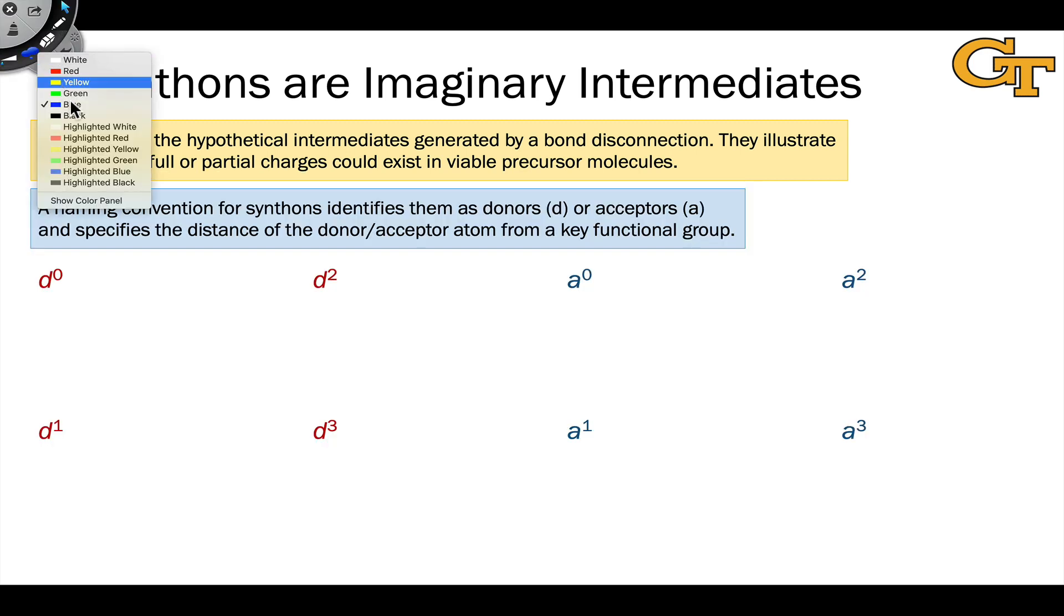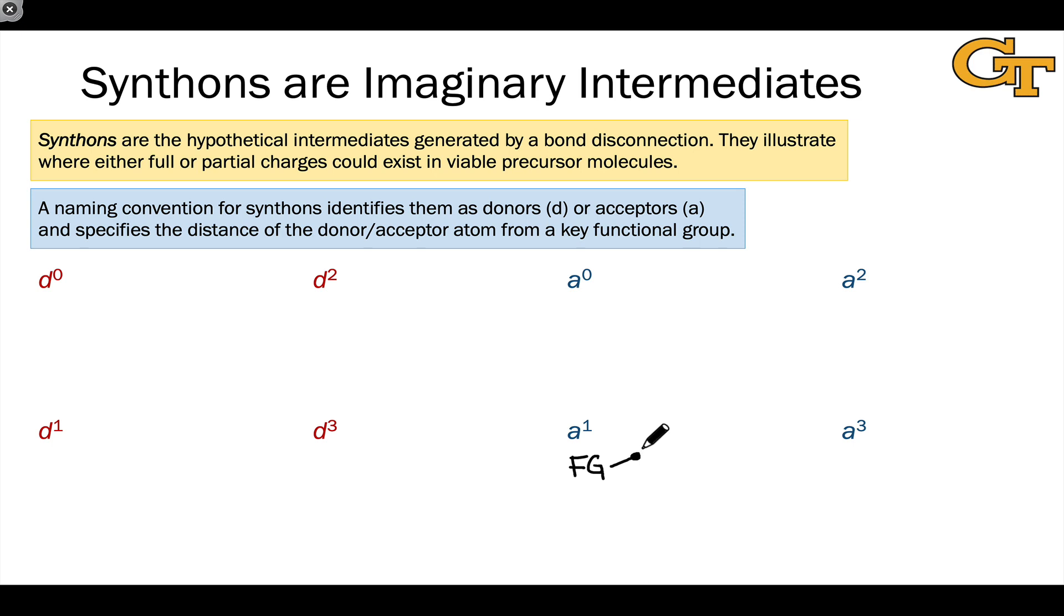Now, there's a naming convention for synthons based on the charge, whether it's positive or negative, and the relationship of that charge to an important functional group nearby. The naming convention uses either D or A for a donor—these are negatively charged—or acceptor, A for acceptor—these are positively charged. And the number in superscript here indicates the distance between the functional group and the donor or acceptor atom. Typically, this atom is a carbon, nine times out of ten.